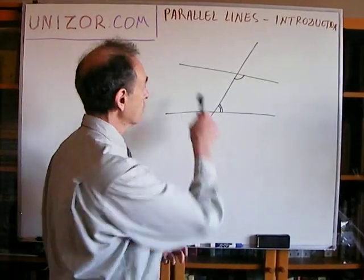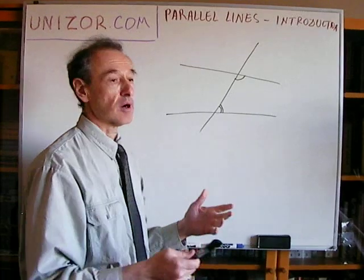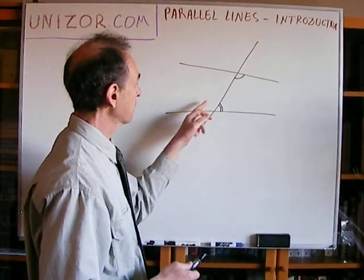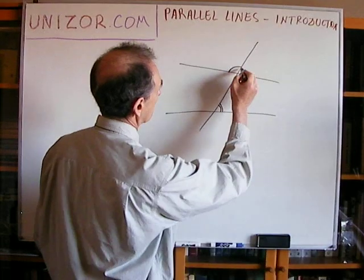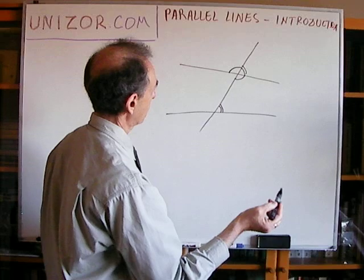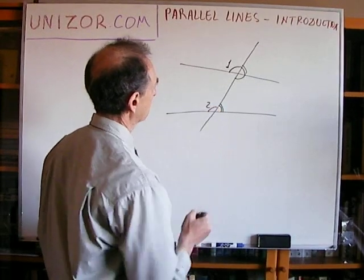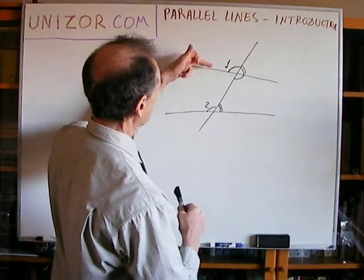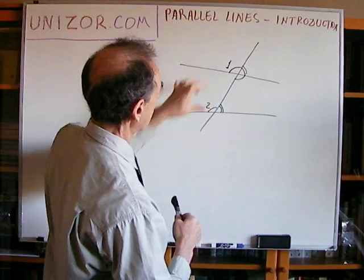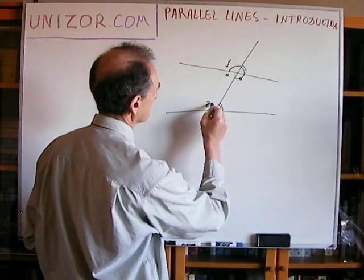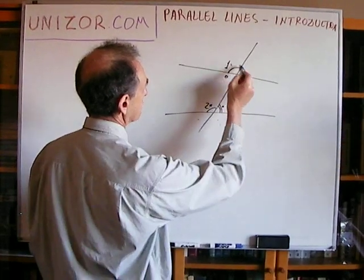First of all, terminology. If you have two lines and a transversal which intersects both of them, there is certain terminology about the angles which are formed. There are eight angles — four here and four there. Among themselves, some are called vertical angles, and some are supplemental. Now, since we have two different lines, the four angles between the two lines are called interior angles, and the other four are called exterior angles.